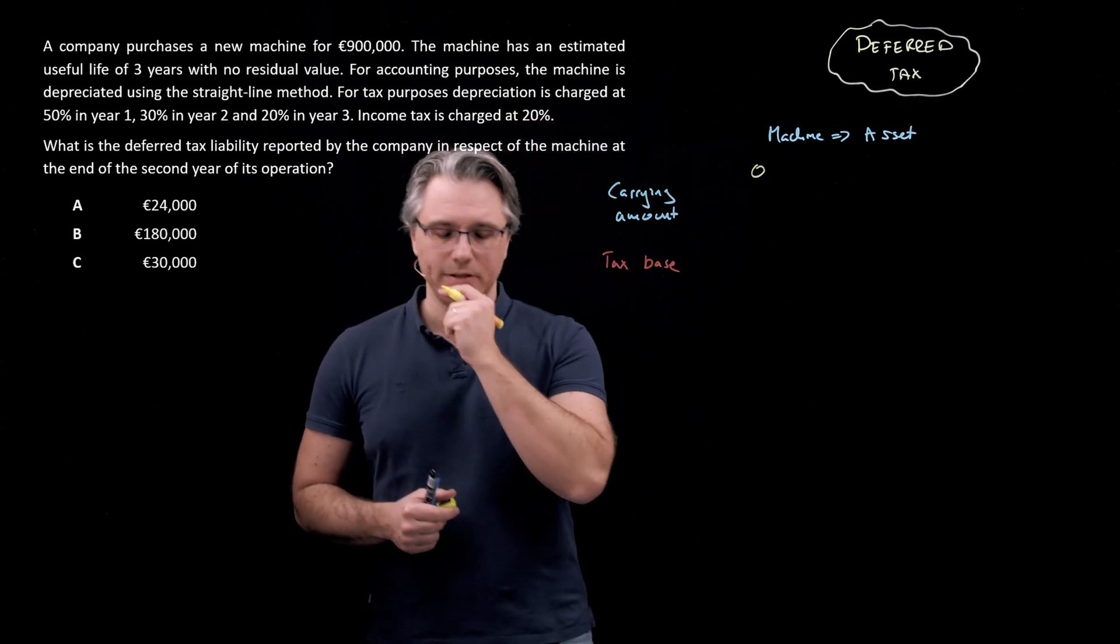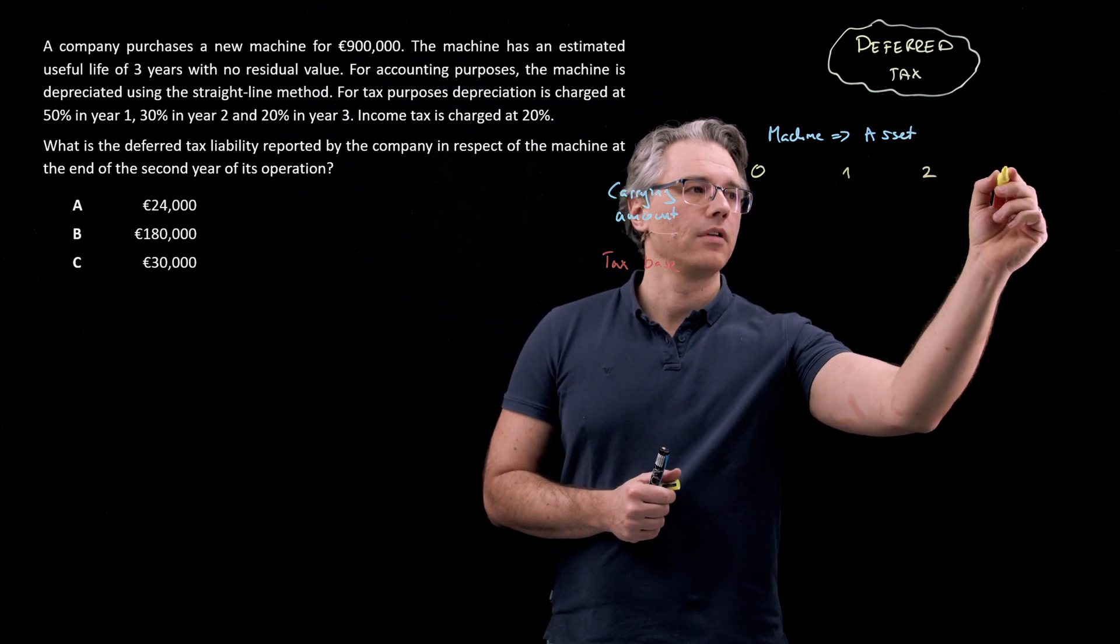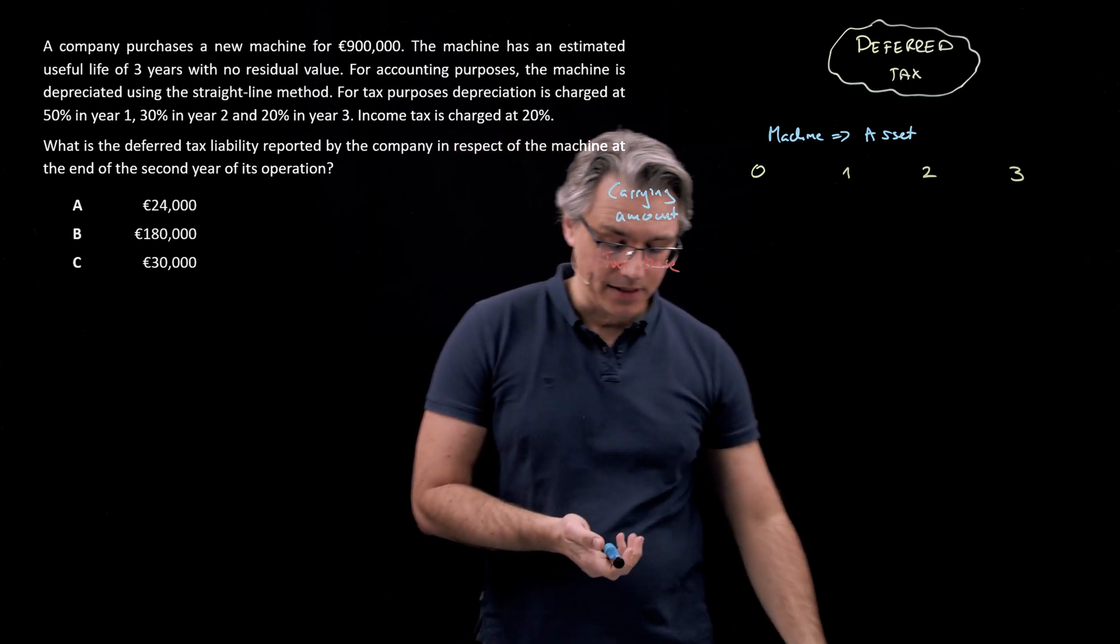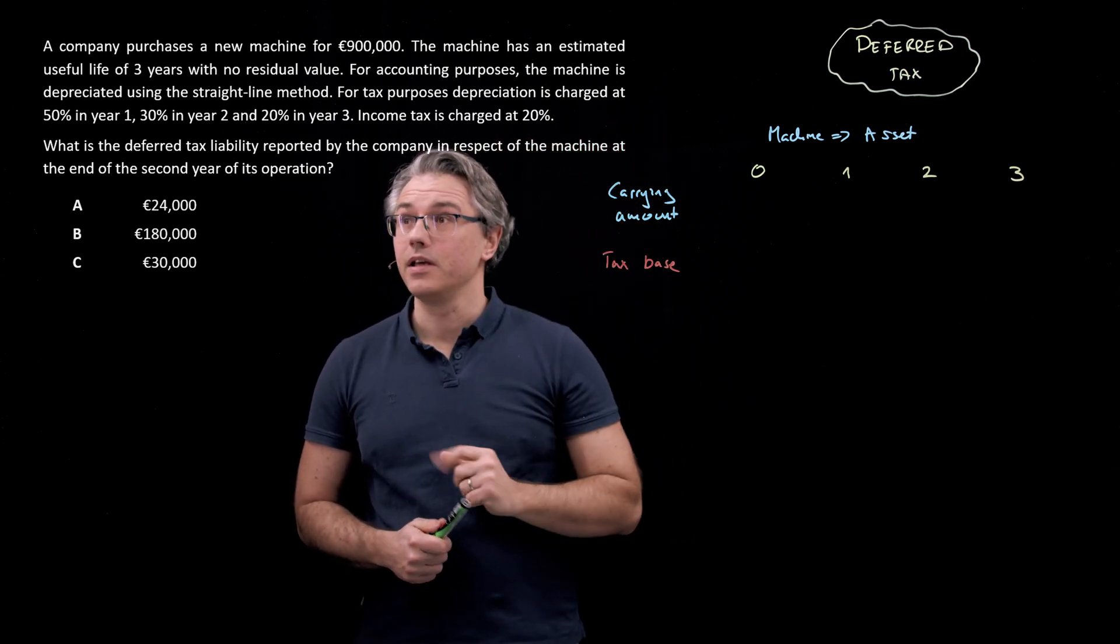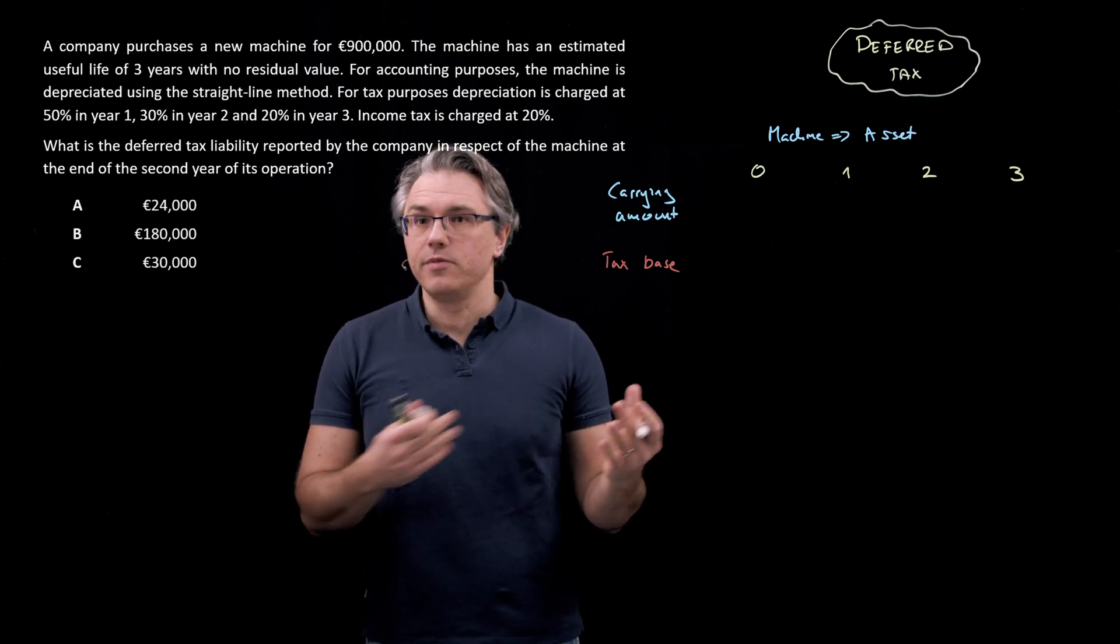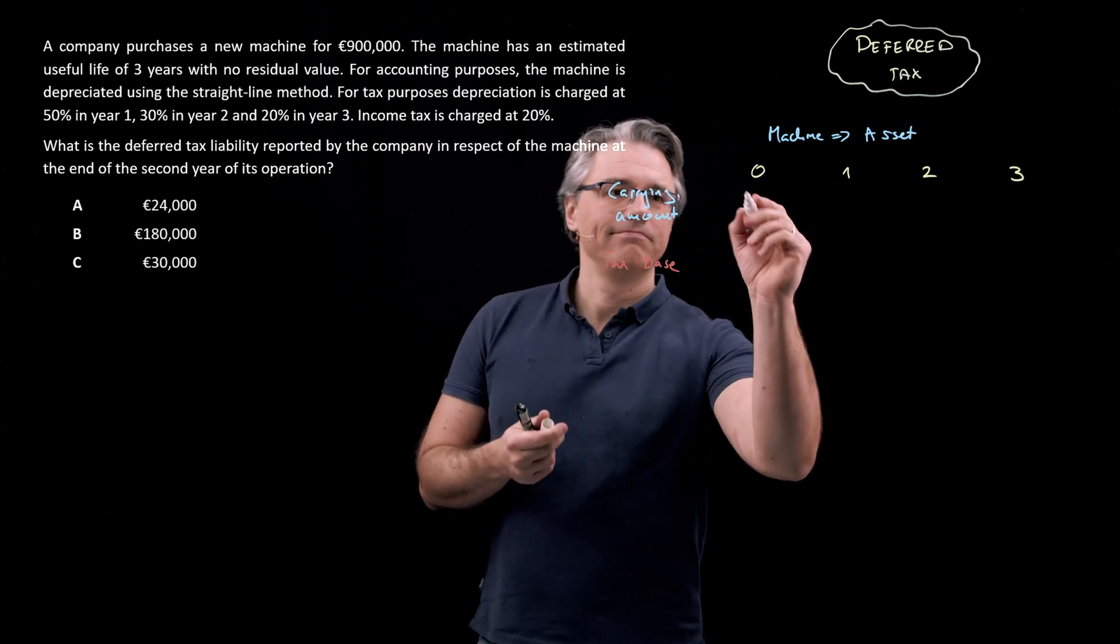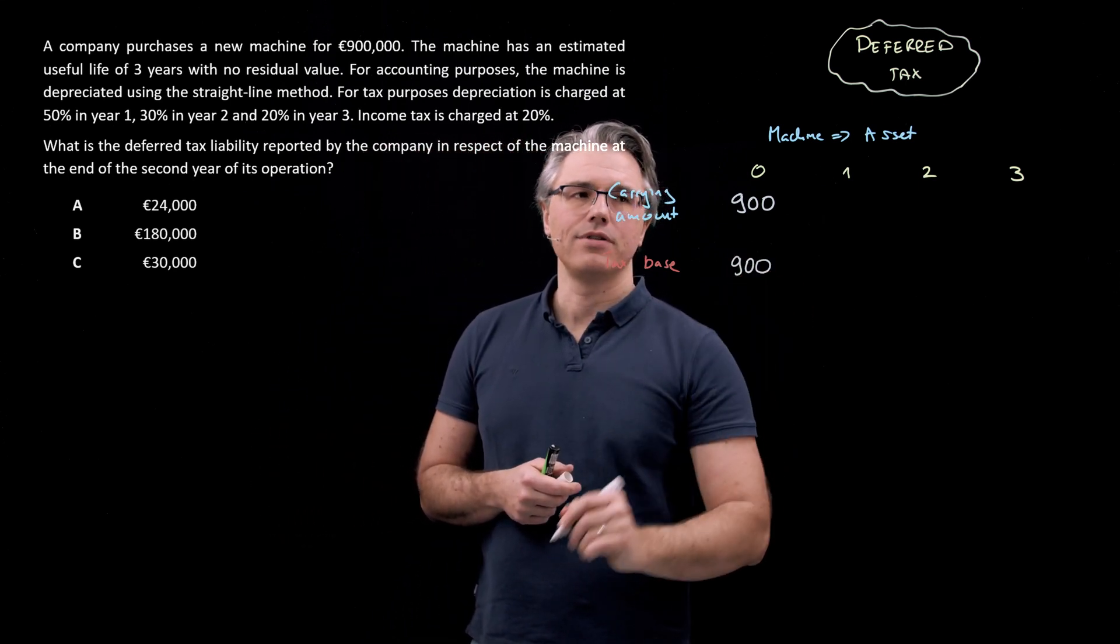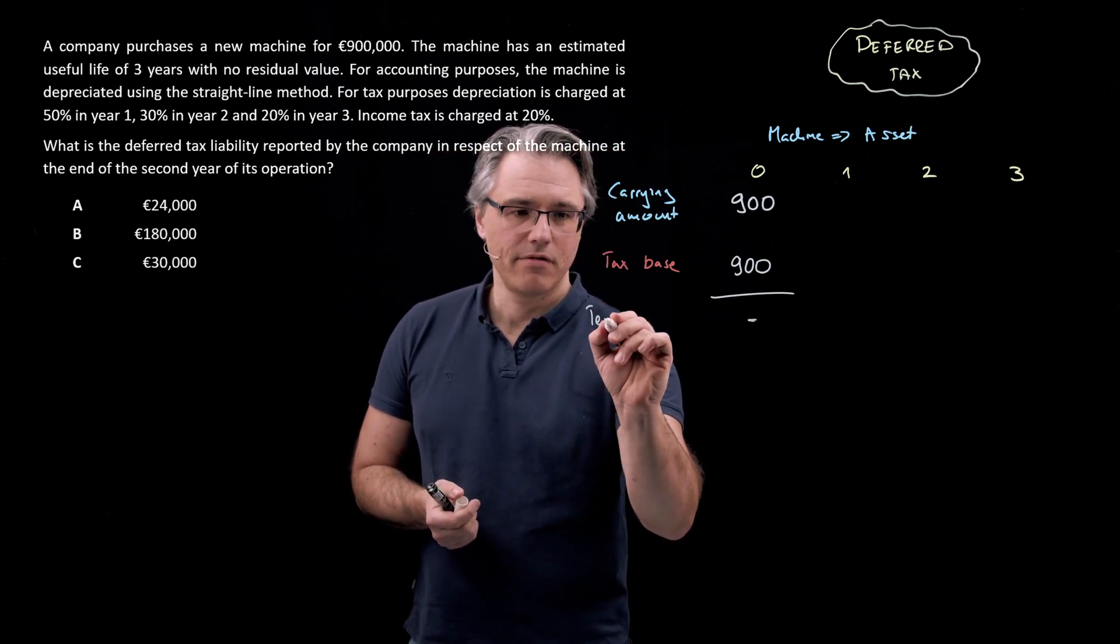And we're going to do this at several moments in time. So point zero, which is when the machine is acquired, and then the subsequent three years, because we're told it has a three year estimated useful life: one, two, and three. And at each point, we're going to check whether there exists a difference, a temporary difference between the two values.